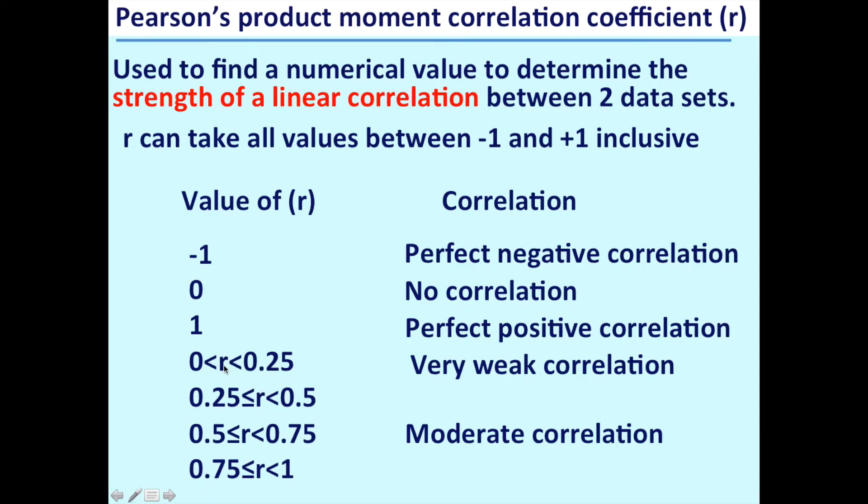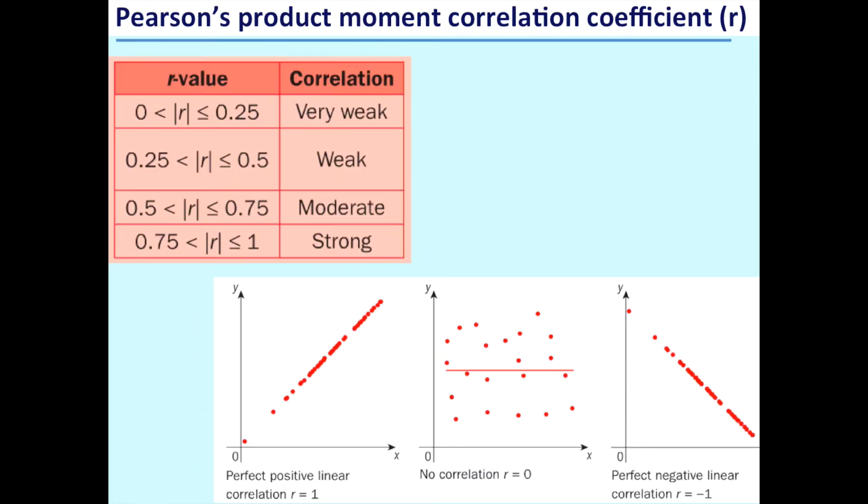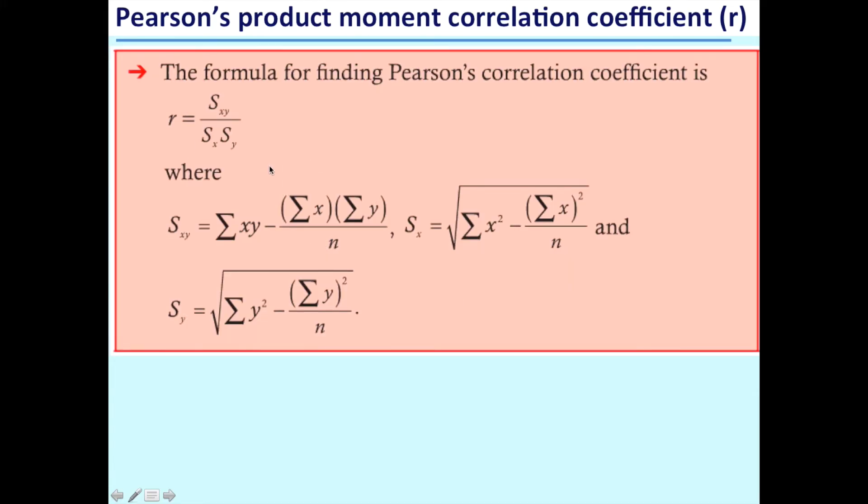A value of 0 obviously is no correlation. A value of 1 is perfect positive correlation. Between 0 and 0.25, and this should be the modulus of r because it could be, for instance, negative 0.11, we're talking about very weak correlation. Between 0.25 and 0.5 is weak, between 0.5 and 0.75 is moderate, and between 0.75 and 1 is strong correlation.